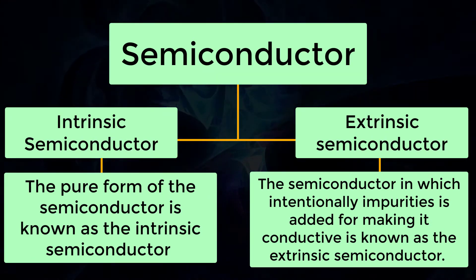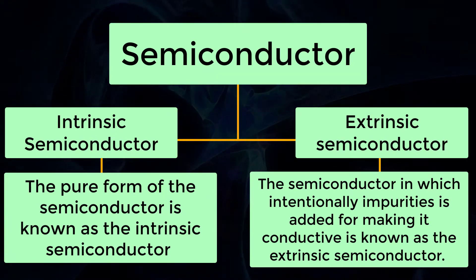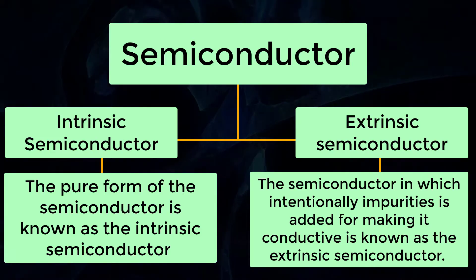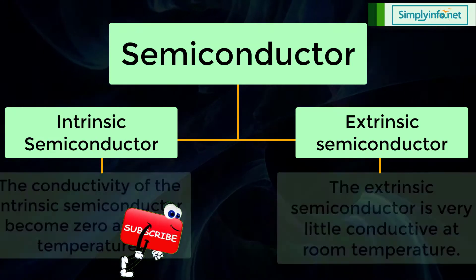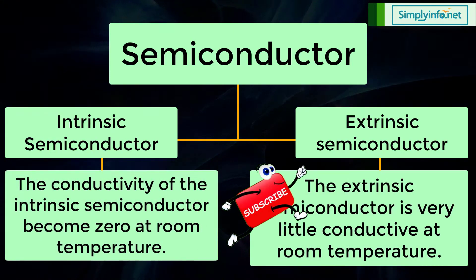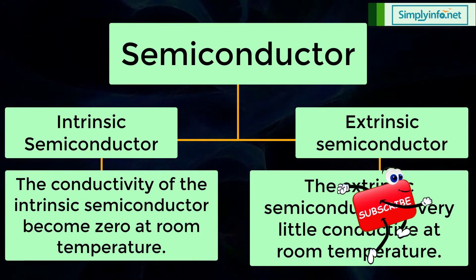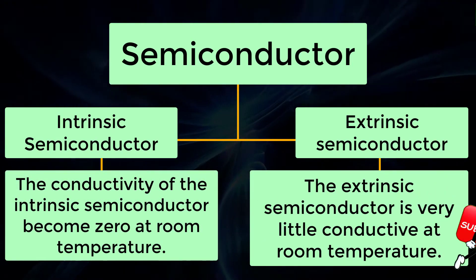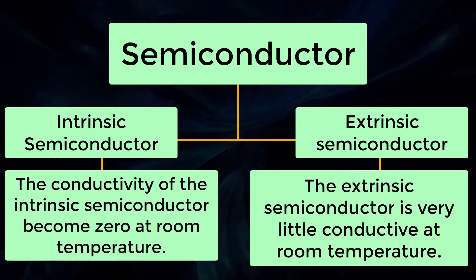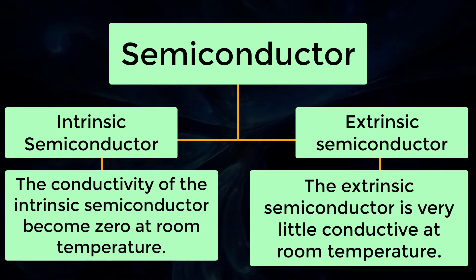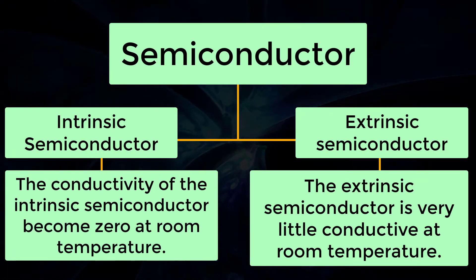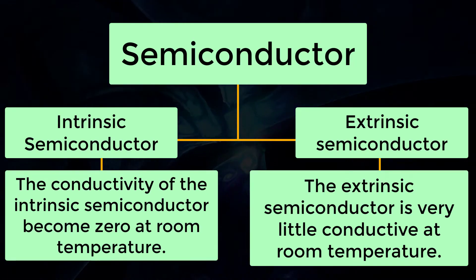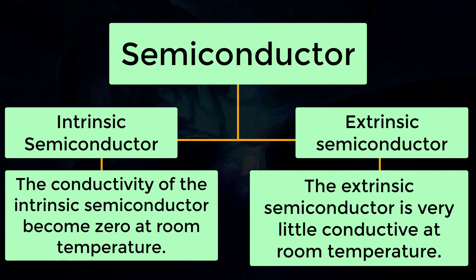In short, intrinsic is pure and extrinsic is impure. The conductivity of the intrinsic semiconductor becomes zero at room temperature, while the extrinsic semiconductor is very little conductive at room temperature.